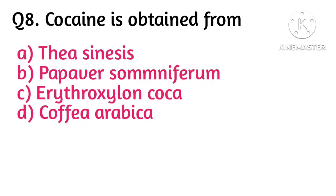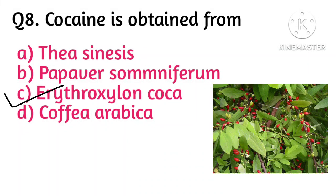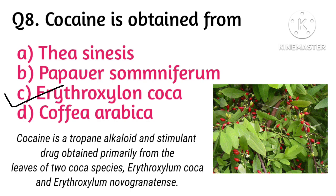Next question: cocaine is obtained from — option C is correct, that is Erythroxylum coca. Cocaine is obtained from Erythroxylum coca. Cocaine is a tropane alkaloid and stimulant drug obtained primarily from the leaves of two coca species: Erythroxylum coca and Erythroxylum novogranatense.